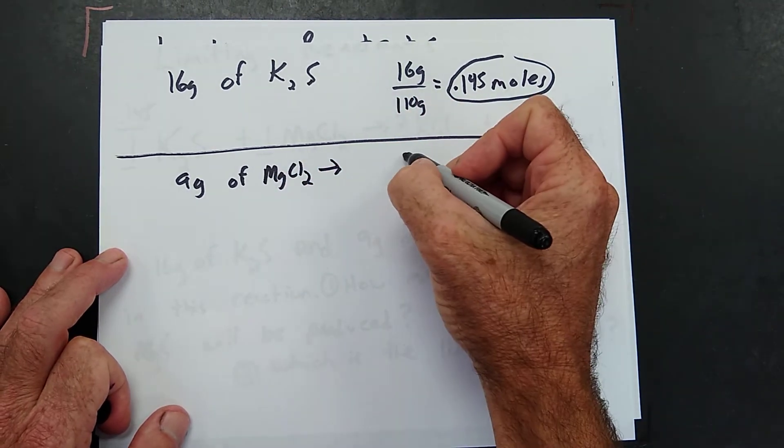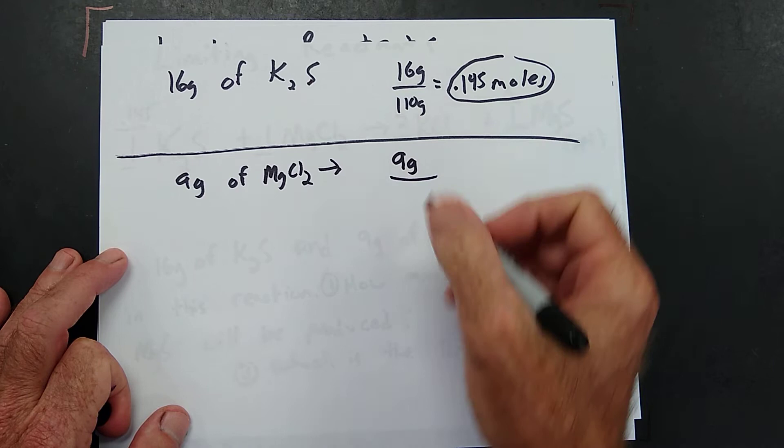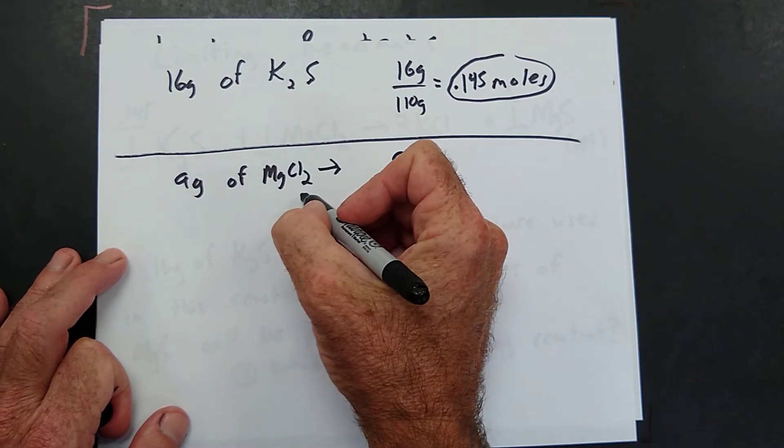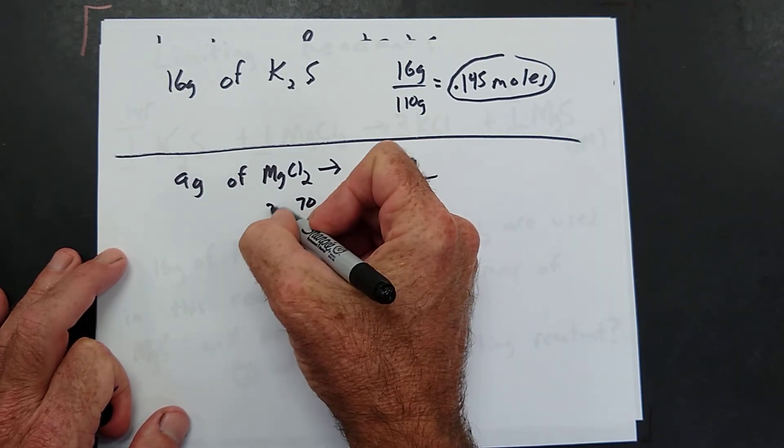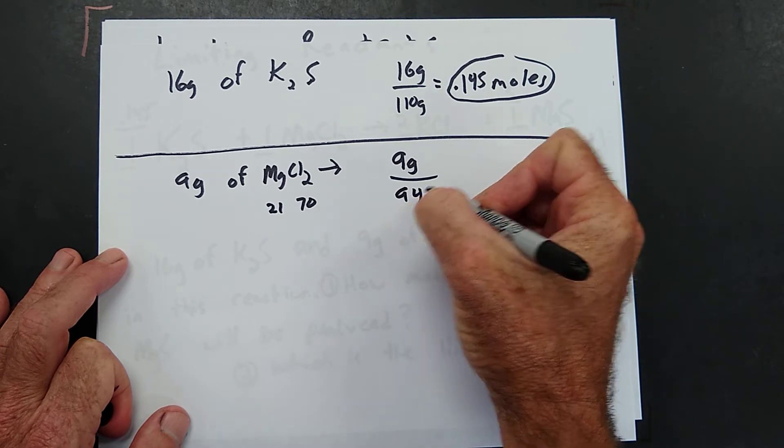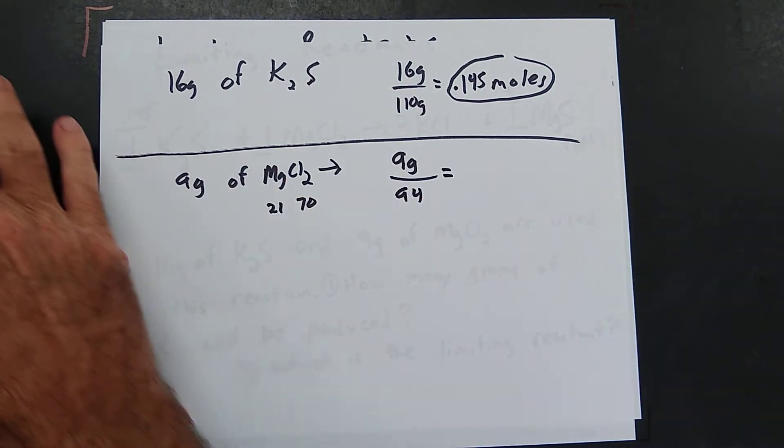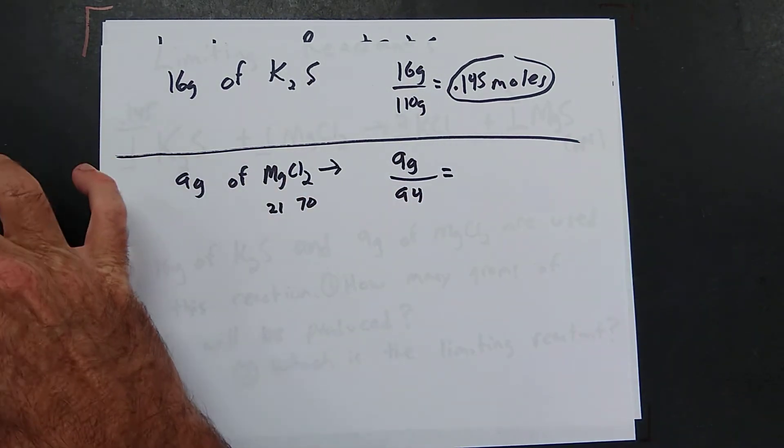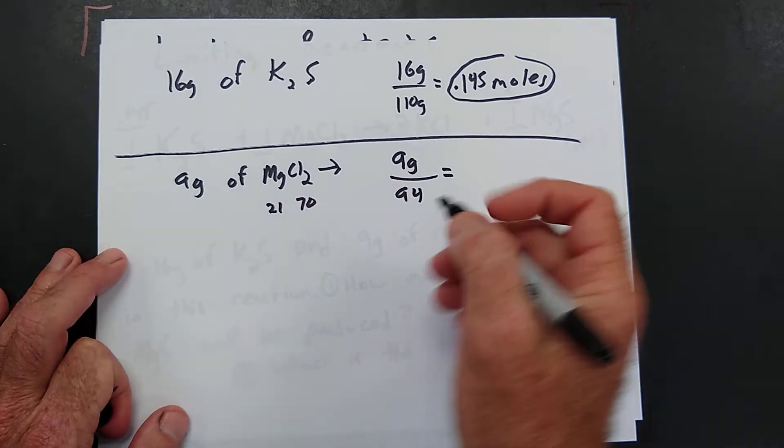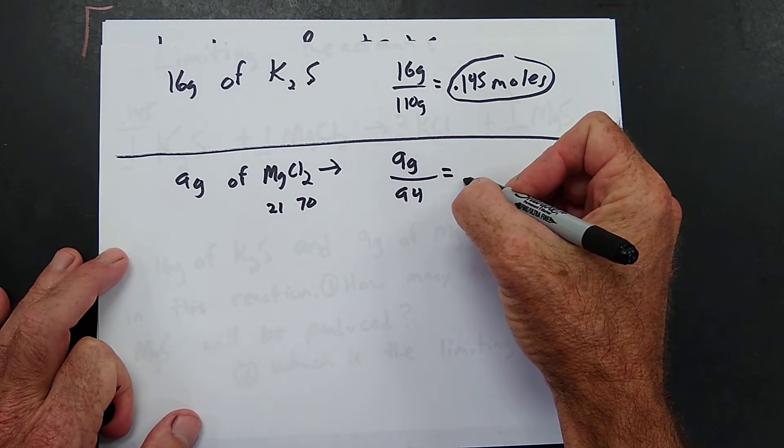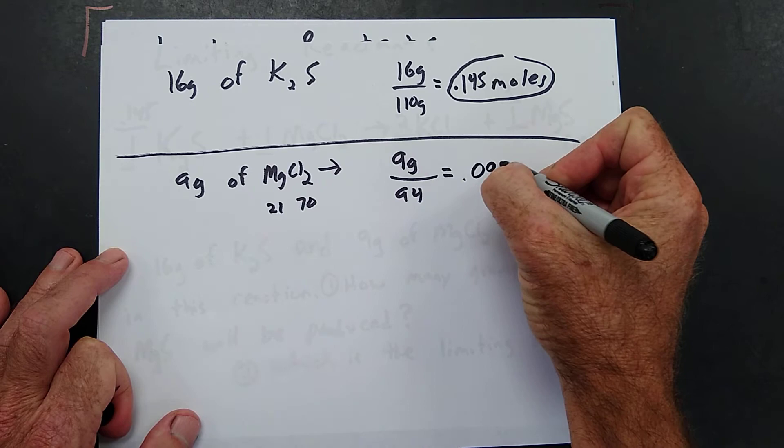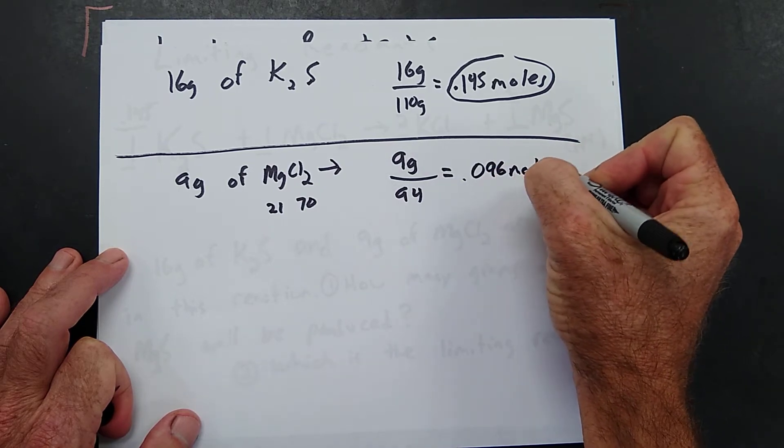9 grams of MgCl₂. See how many moles that would be? 9 grams and MgCl₂. This would be 70 and that would be 24. 9 out of 94. 9 divided by 94 equals 0.096 moles.